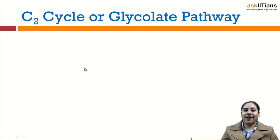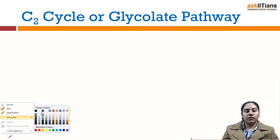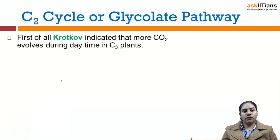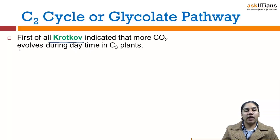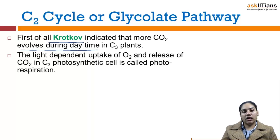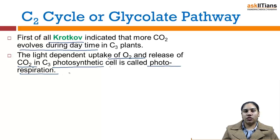We'll start with the C2 cycle or glycolate pathway. This glycolate pathway is also known as photorespiration. First of all, more carbon dioxide evolves during the daytime in C3 plants. The light-dependent uptake of oxygen and release of carbon dioxide in the C3 photosynthetic cell is called photorespiration.